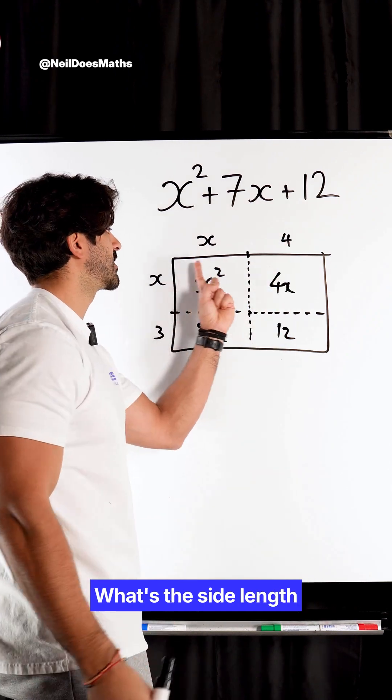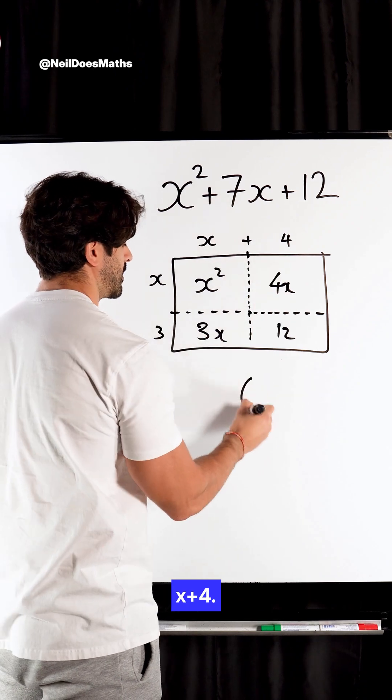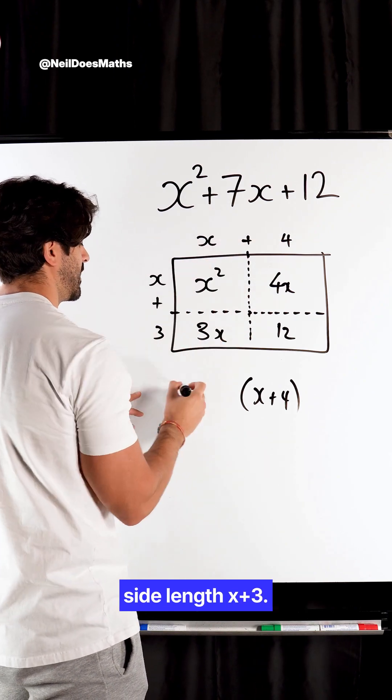So how does it factorize? What's the side length of this rectangle? It is x plus 4, x plus 4. And the area can be found by multiplying this by this side length, x plus 3.